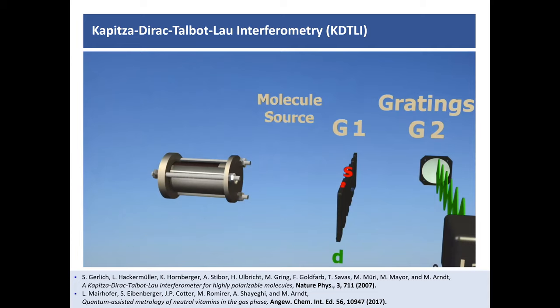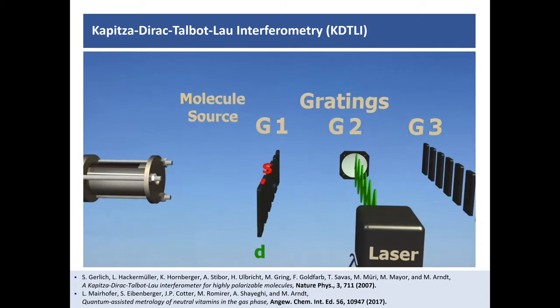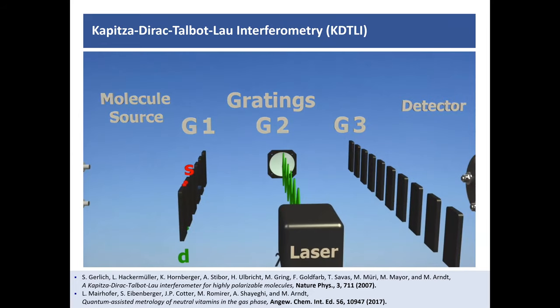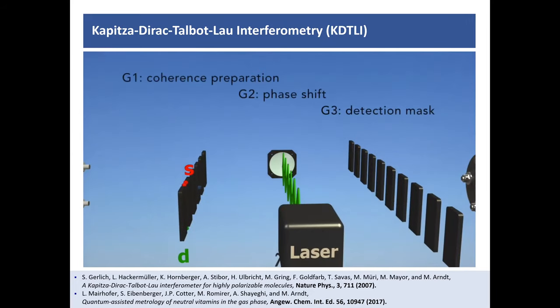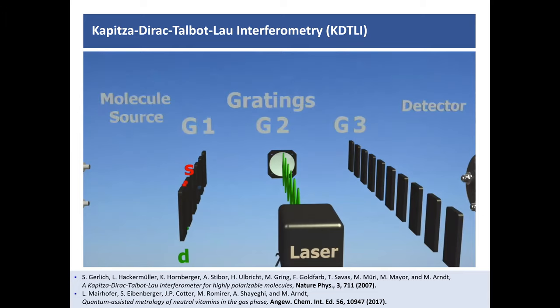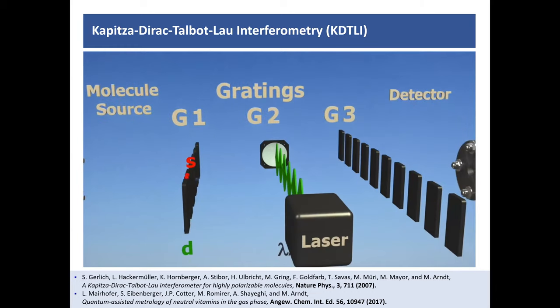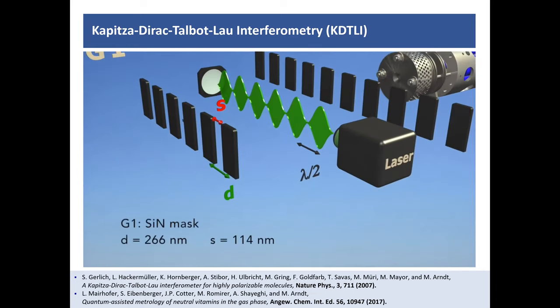So, there we have our source. That can be in the simplest of all cases, just an oven, where we evaporate vitamins, fullerenes, tripeptides, whatever. But they come out of the oven with a Maxwell-Boltzmann thermal distribution. They're internally hot, they're externally hot. They do not want to behave as a wave. So, you have to force them to do that. And this grating, the first grating is doing this. And so, that grating here is a nanostructured nanomaterial grating, 266 nanometer period, and only 110 nanometer slit widths.